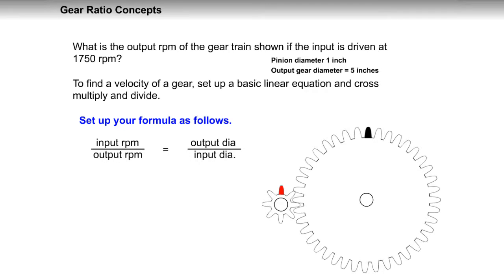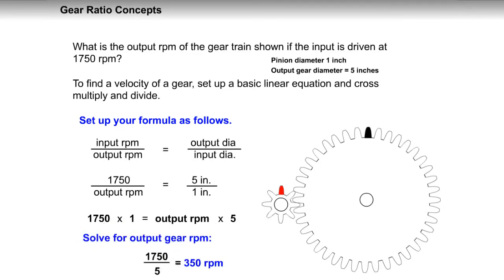Set up your formula as follows. Input RPM over output RPM equals output diameter over input diameter. 1750 times 1 equals output RPM times 5. Solve for the output gear RPM. 1750 over 5 equals 350 RPM.